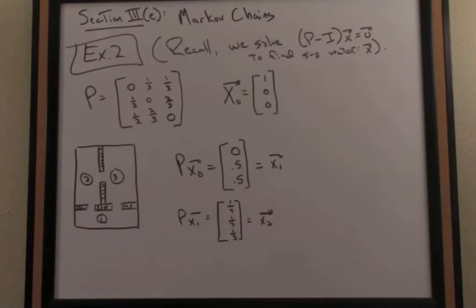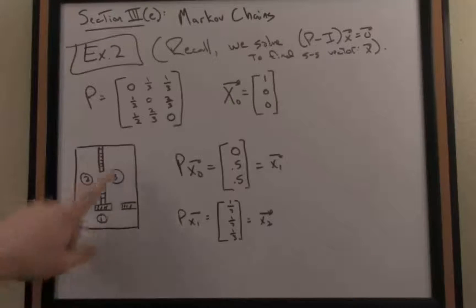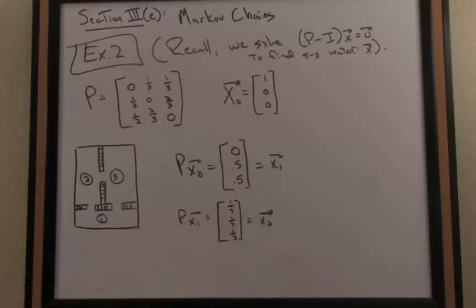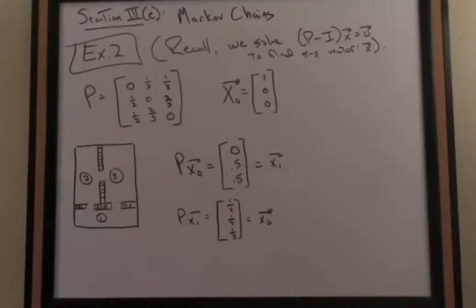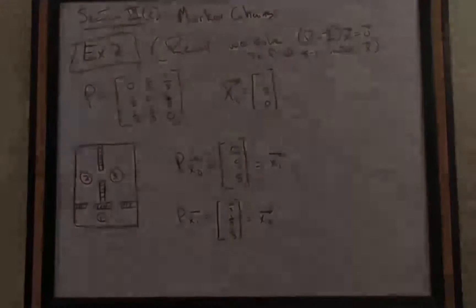I would interpret this result to say after two movements of the mouse in the maze, there's an equal chance, a one-third probability that the mouse is either in room one, room two, or room three. The big question is, what is the end behavior of the movement of the mouse in the maze? In other words, what is the steady state vector for this system?